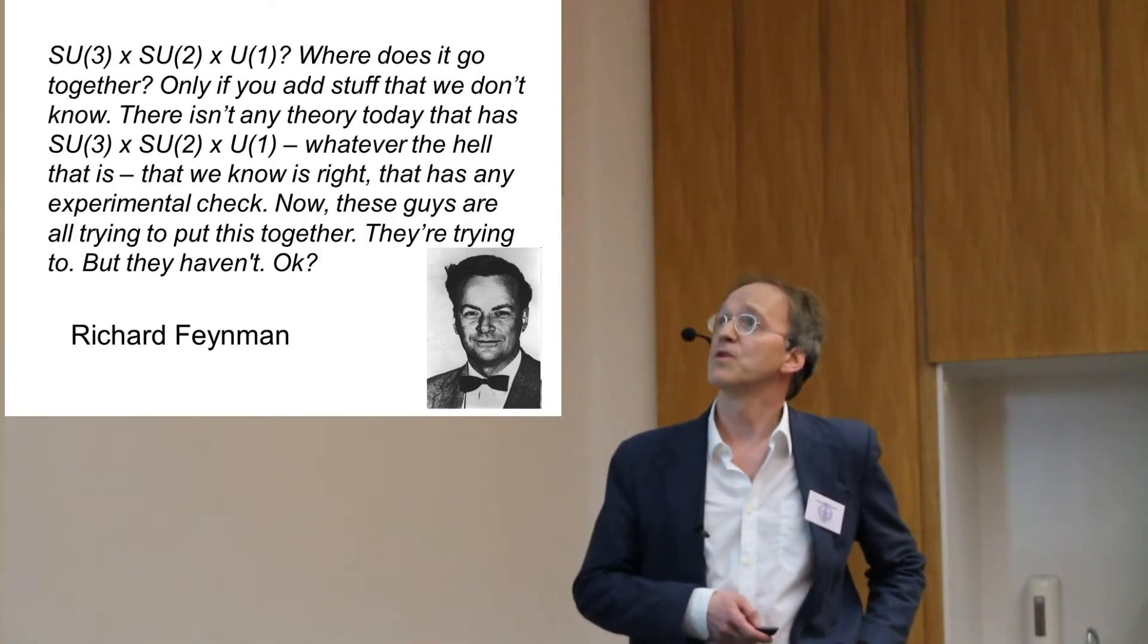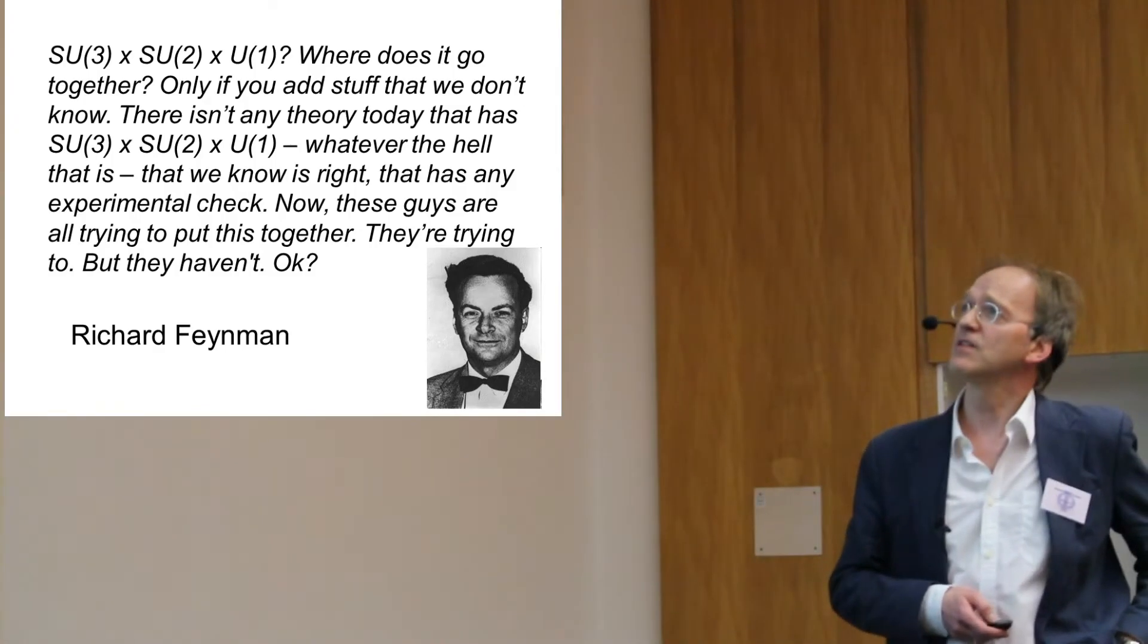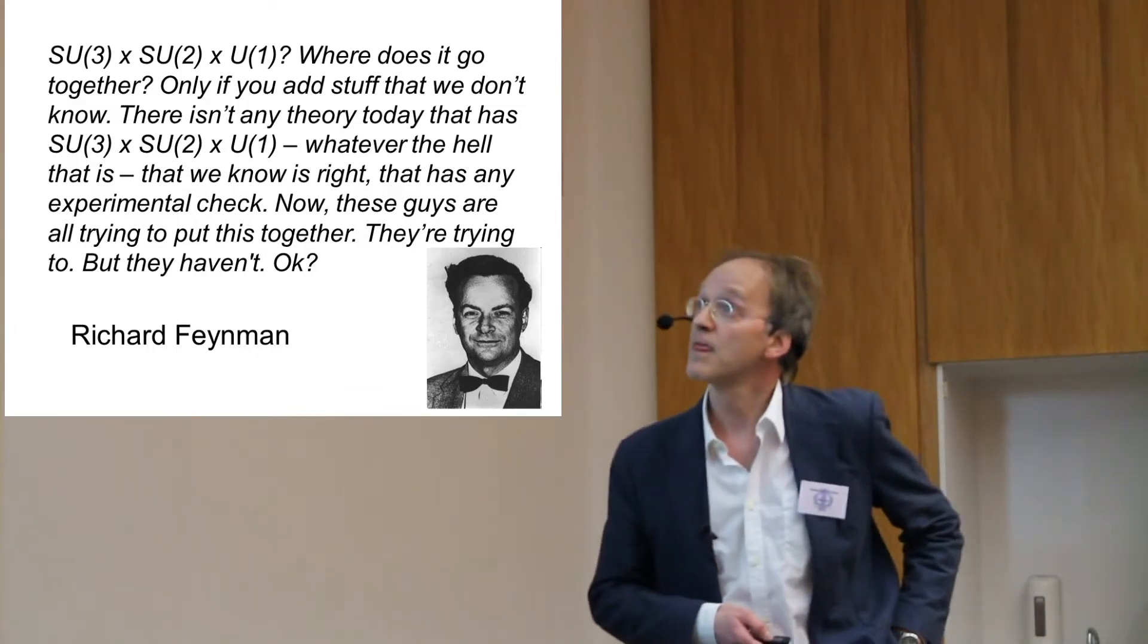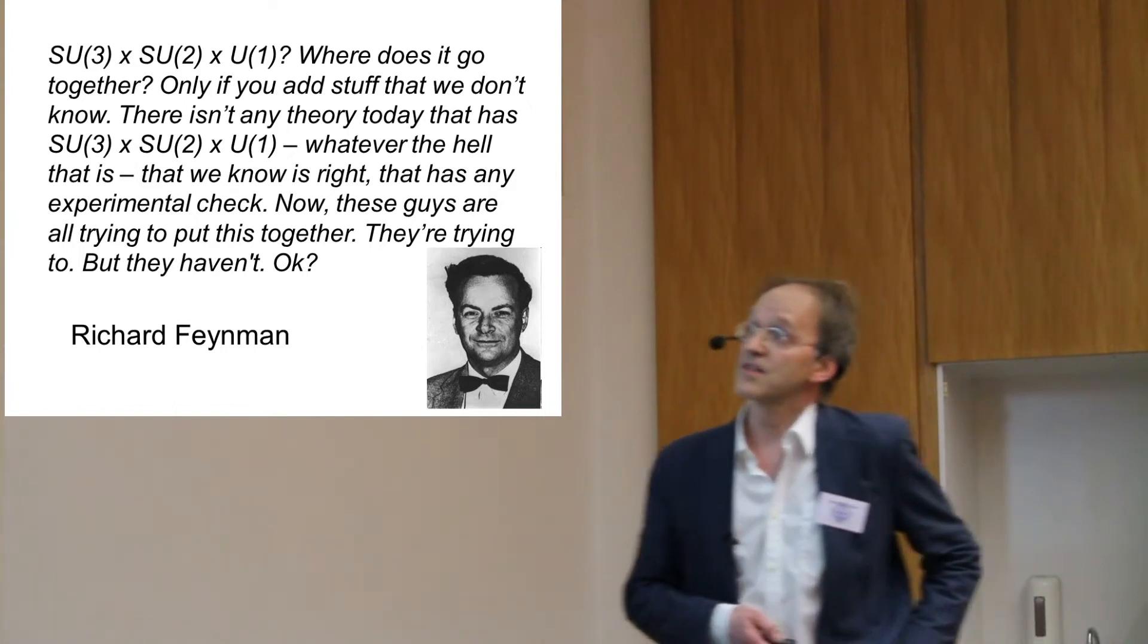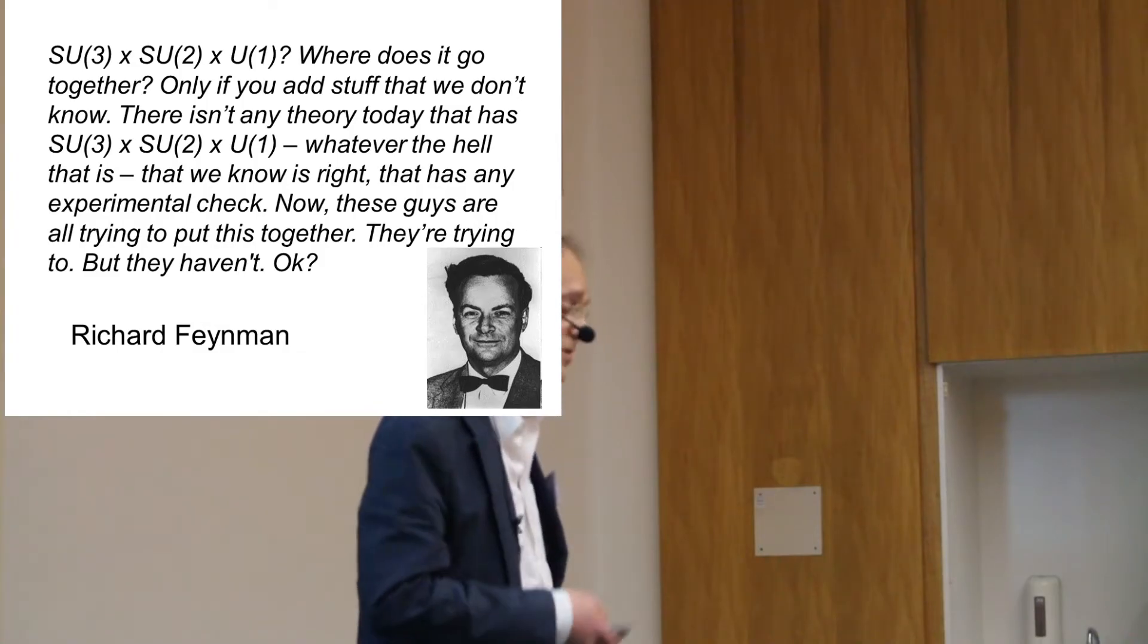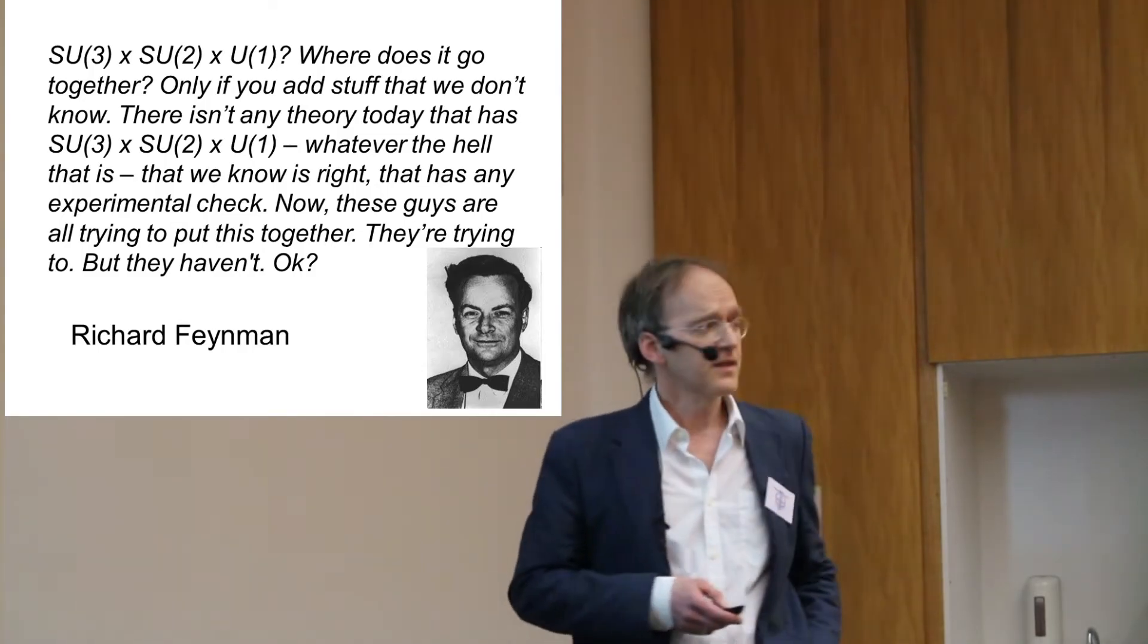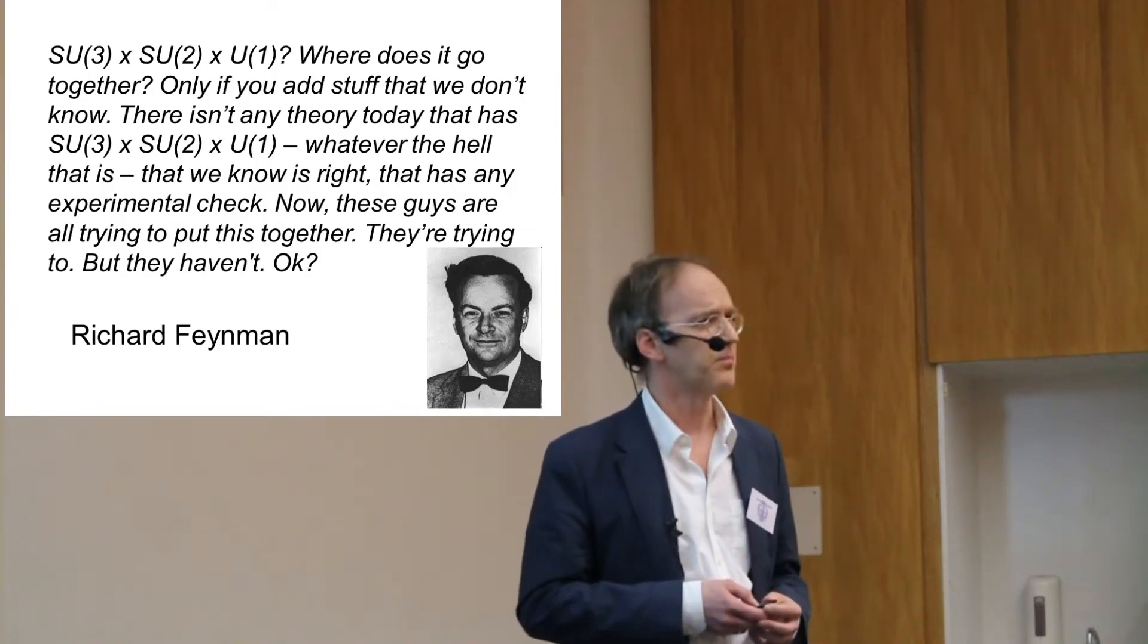And some people justifiably called it like this. Richard Feynman was a little bit outspoken: SO(3) times SU(2) times U(1). Where does it go together? Only if you add stuff that we don't know. There isn't any theory today that has any of that, whatever the hell that is, that we know is right, that has any experimental check. Now these guys are trying to put this together, but they haven't. So I don't know. You might be, instead of that group, you might be a fan of SO(5) or something. I think that's a superficial kind of dull idea. But that's not the basic problem.